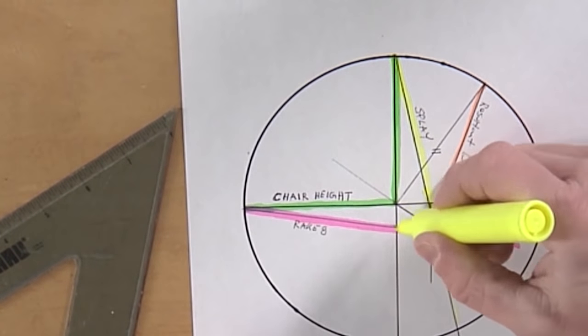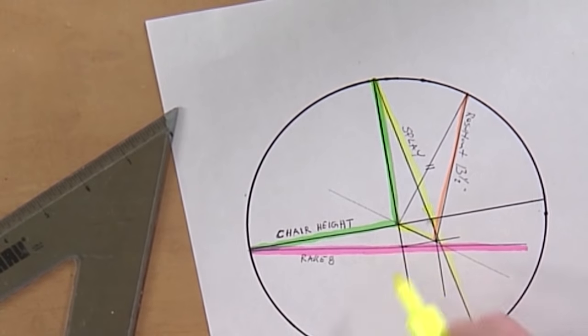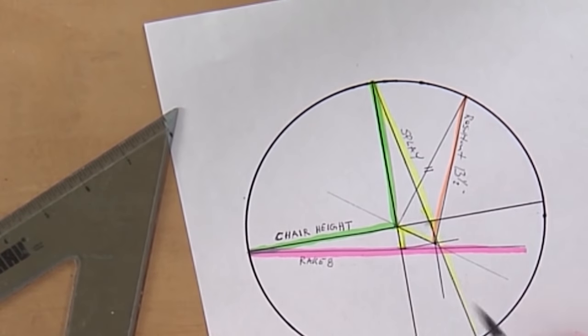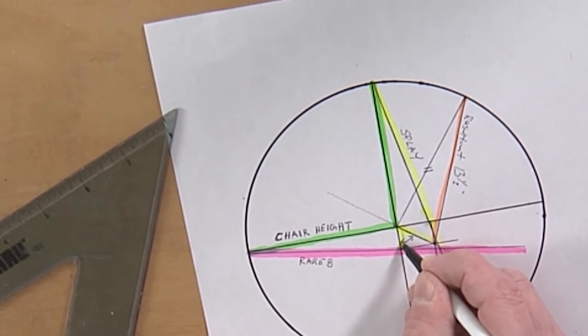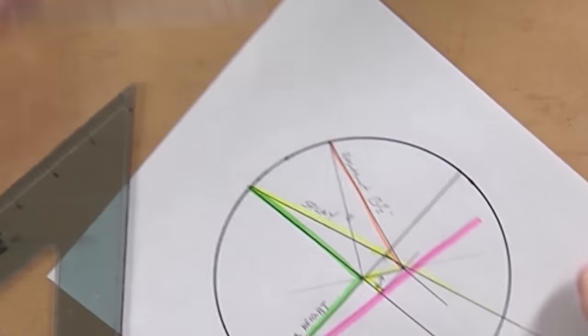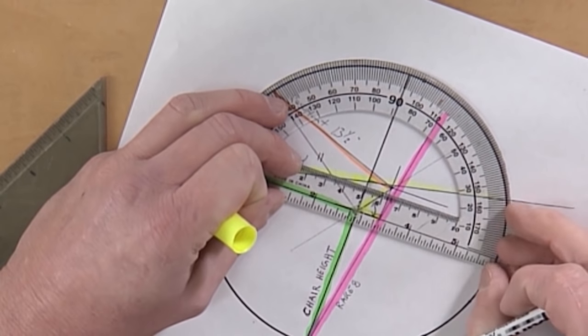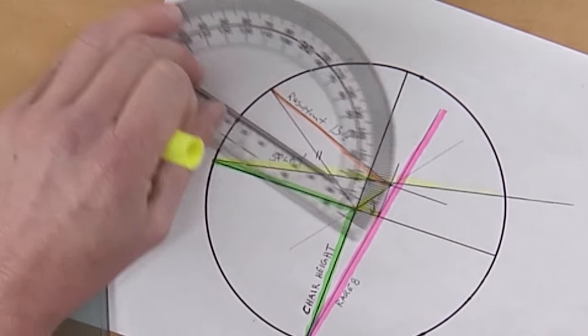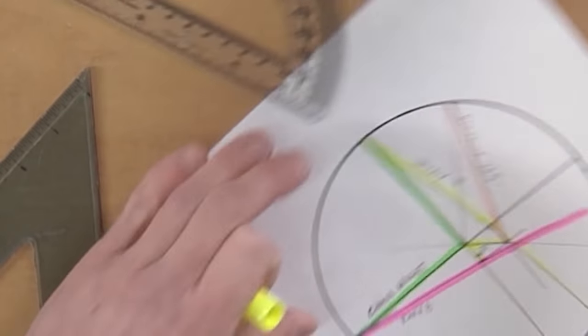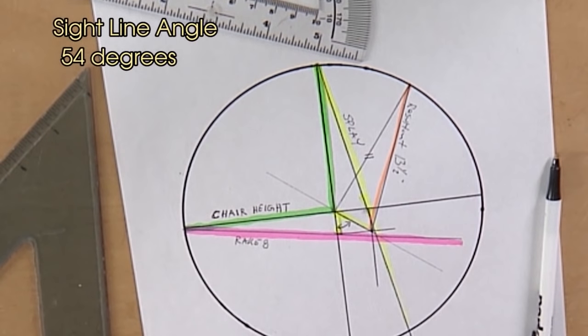Let me use the yellow again. If I measured the distance between these two right in here. Put my protractor on that and measure it. And I come out to 54 degrees. So there's my four angles.